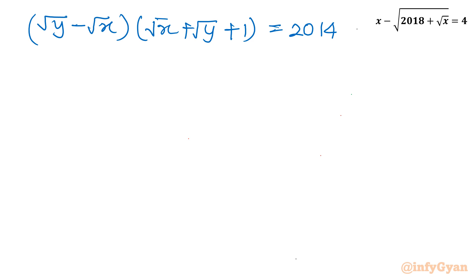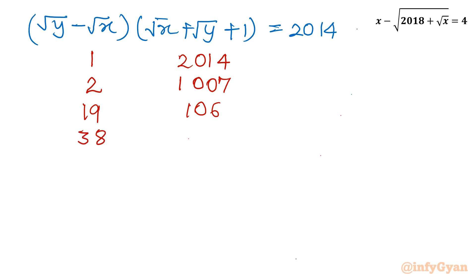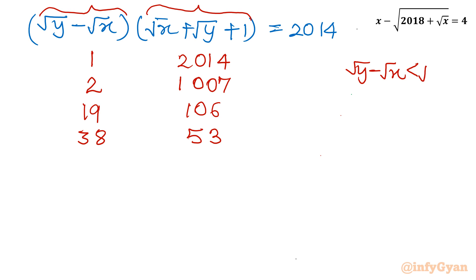Because √x and √y are both integers, I can consider factor pairs that multiply to 2014: 1×2014, 2×1007, 19×106, and 38×53. Now, since (√x + √y + 1) must be greater than (√y − √x), we can reject combinations where the larger factor is assigned to (√y − √x). So we keep only those cases where (√y − √x) is less than (√x + √y + 1).